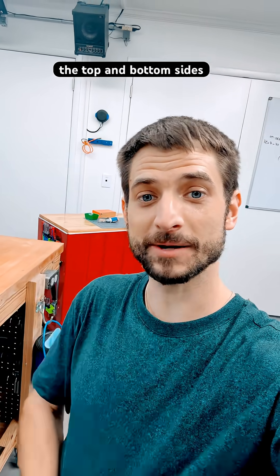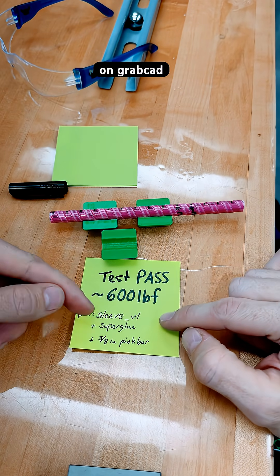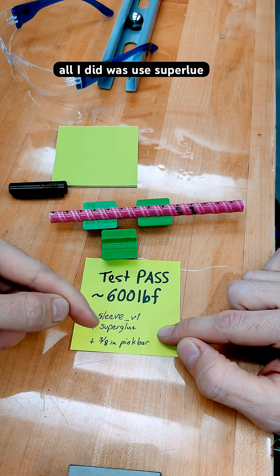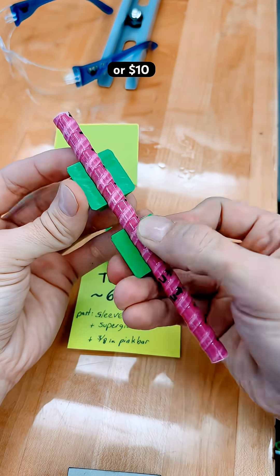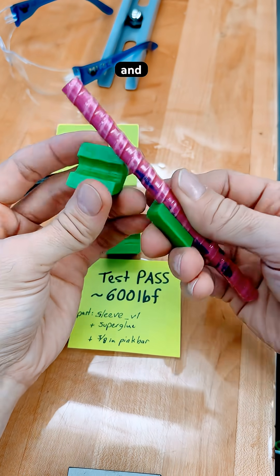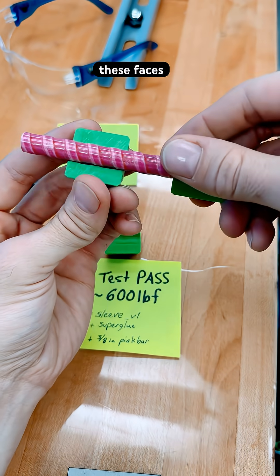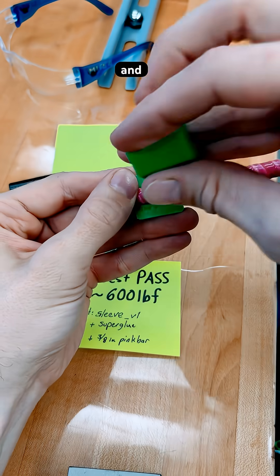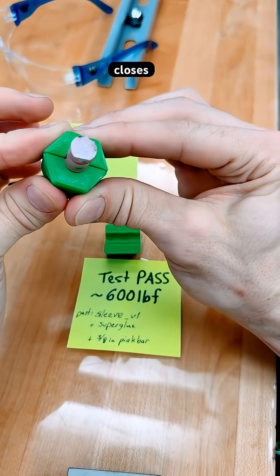The part is called sleeve version 1, posted on GrabCAD. All I did was use super glue and 3A cinch pink bar. This is the fiberglass rebar that's only about five or ten dollars for an eight-foot stick. Then you'll liberally add the super glue here on these faces, bond in one half, and then mate it and bond with the other half so that it closes up neatly.